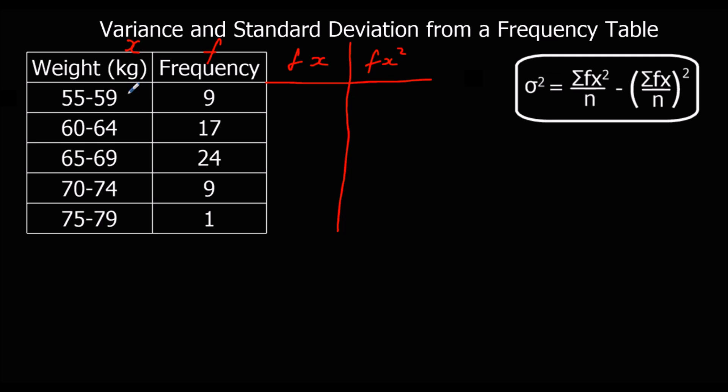So the midpoints are 57, 62, 67, 72, and 77. Then fx is frequency times the midpoint. So 9 times 57 is 513. 17 times 62 is 1054. 24 times 67 is 1608. 9 times 72 is 648. And 1 times 77, which will be 77.